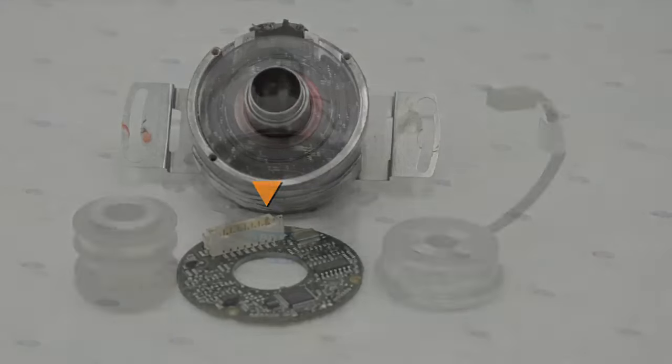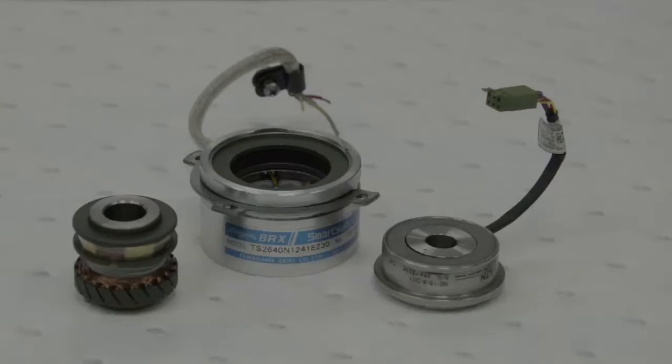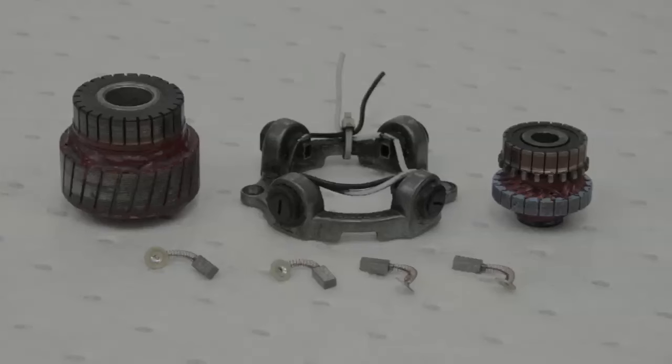The next type of feedback is the resolver. It is an analog device that is used for positioning and monitoring. The last type is a tachometer, which is used for speed.